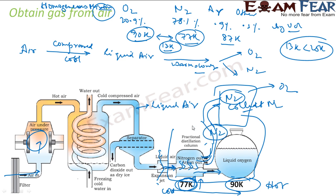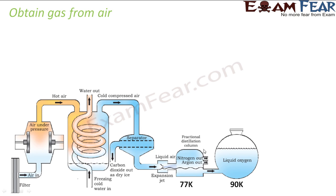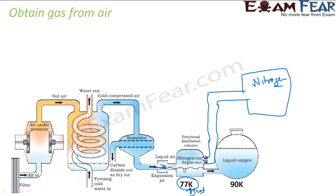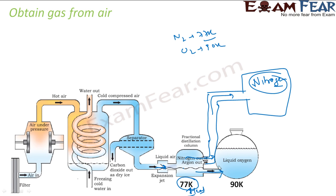Let me explain the flow once more. We have liquid air connected to a tank for nitrogen. This is liquid air. When we maintain a temperature of 77 K, nitrogen — which has a boiling point of 77 K — converts into gas and is collected. Oxygen has a boiling point of 90 K, so it stays liquid. The remaining liquid air flows on and is collected as liquid oxygen.